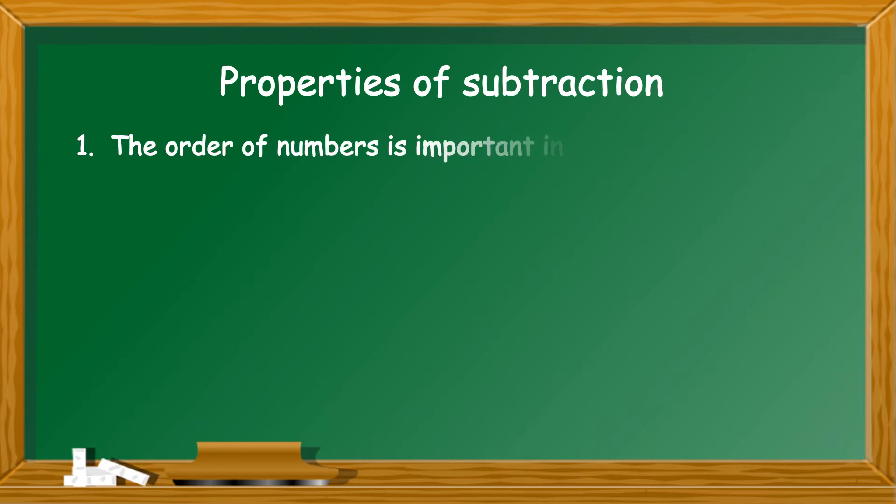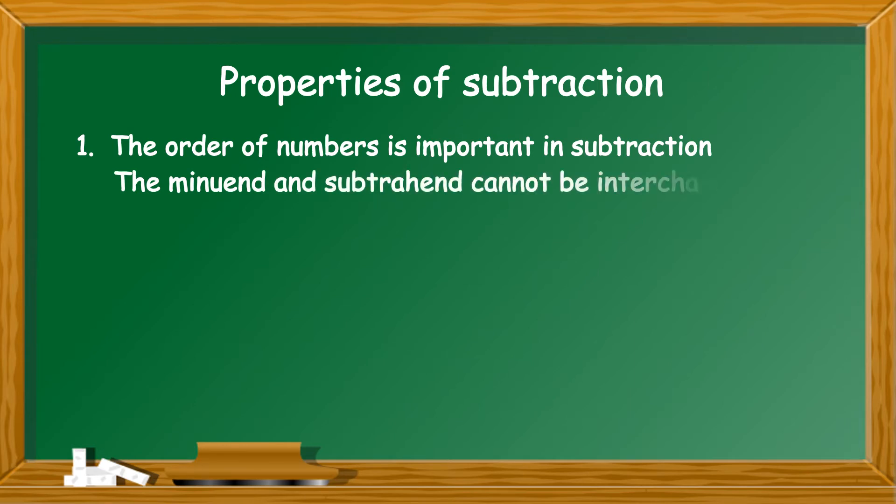Moving on to the properties of subtraction. Property number 1. The order of the numbers is very important in subtraction. This means that the minuend and the subtrahend cannot be interchanged.